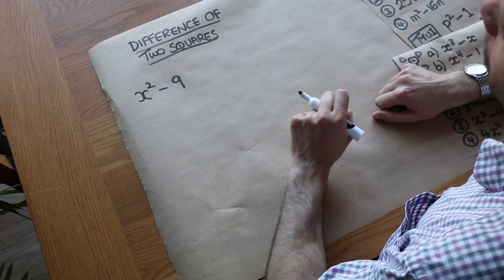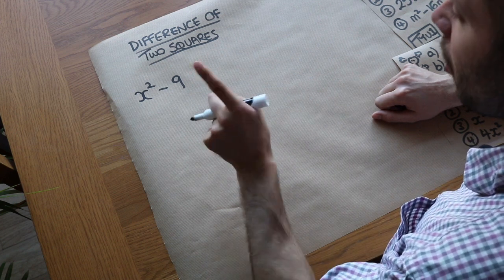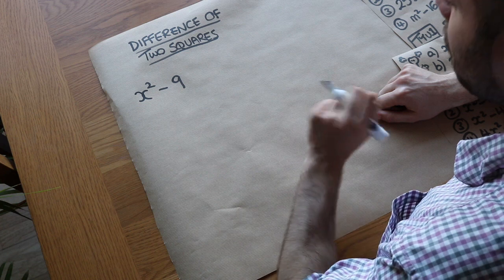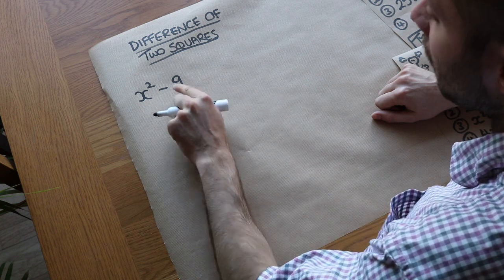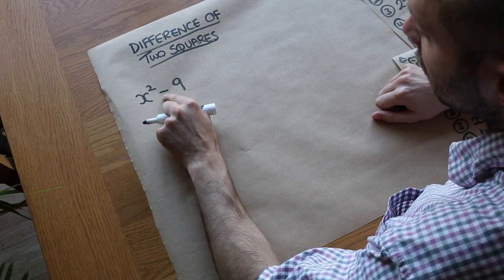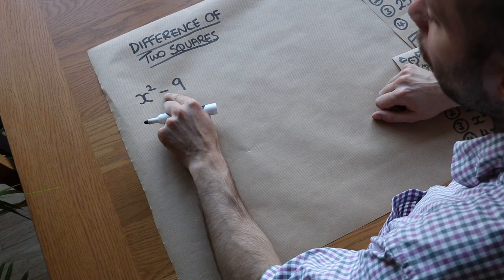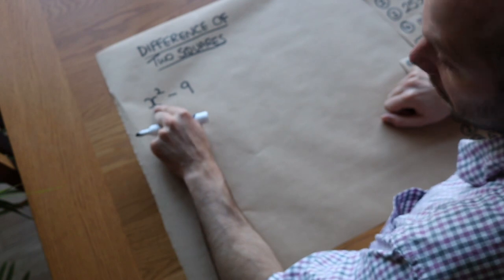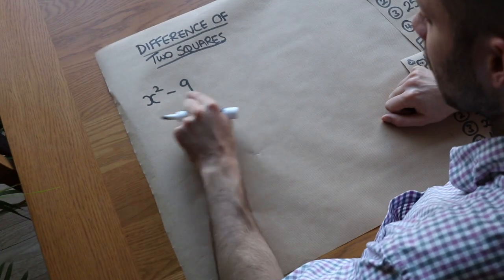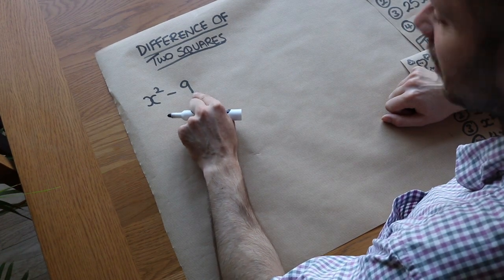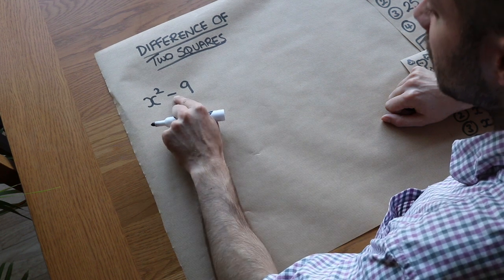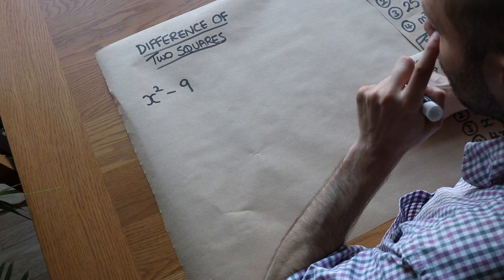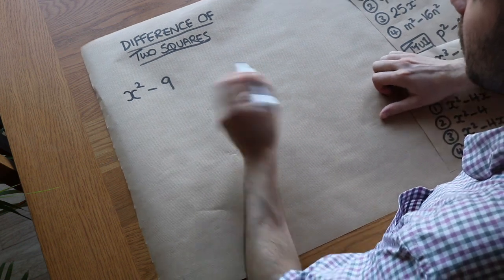This is a slightly different form, and students tend to find this one hardest to spot — maybe because they have the least exposure to it. You can use this method whenever you have the difference — a subtraction — of two squared things. Here, x squared is something squared, and 9 is 3 squared, a square number. So you've got a difference of two squared things, and you can use this factorisation technique.